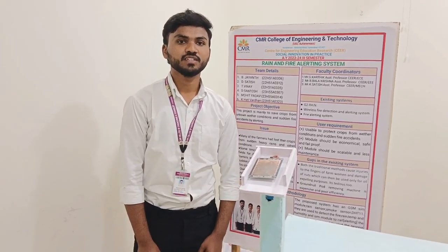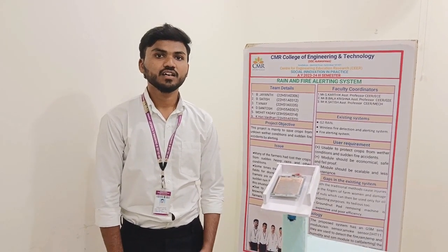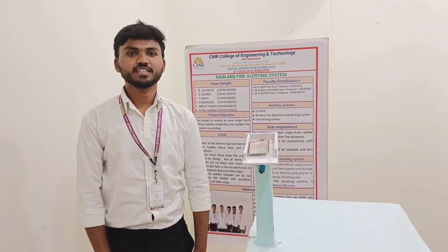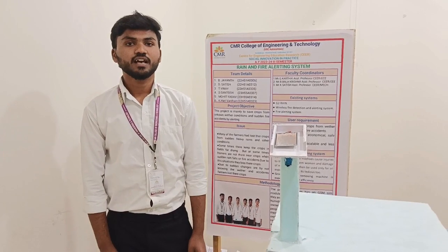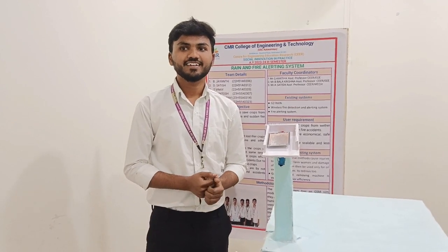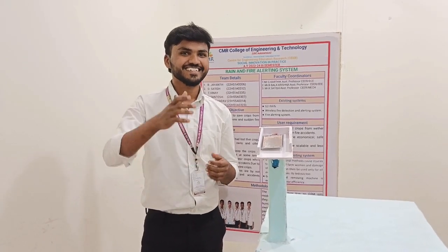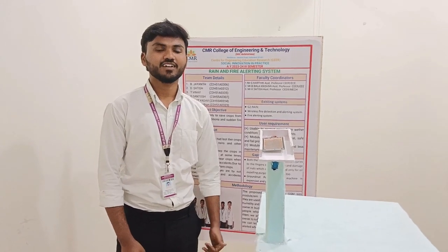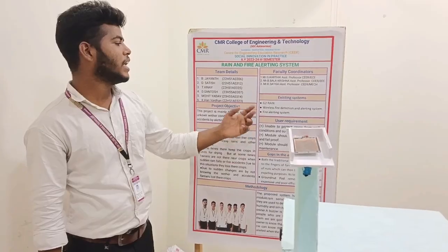I will tell you about the introduction of the rain and fire alerting system. The rain and fire alerting system is an advanced technology designed to monitor and notify individuals in critical conditions. It specifically focuses on heavy rainfalls. This system combines various sensors, data processing, and communication protocols for timely alerts. It mainly helps the farmer when sudden rain occurs — it alerts the farmers by phone call.